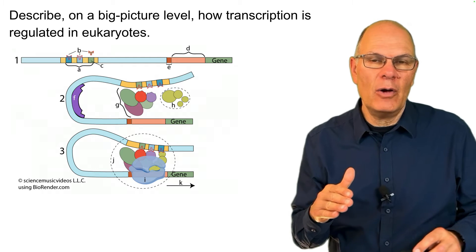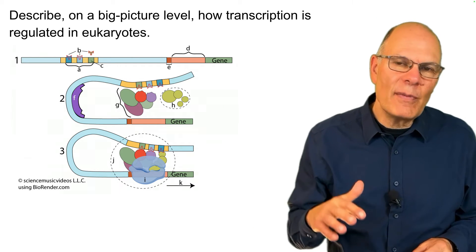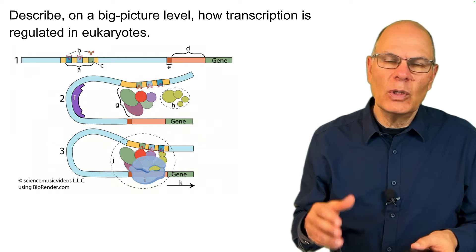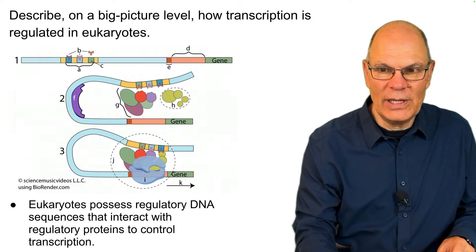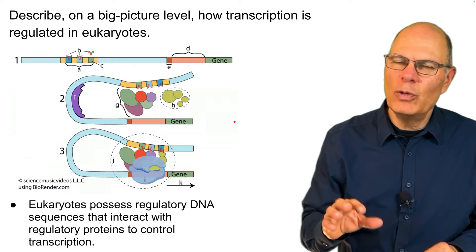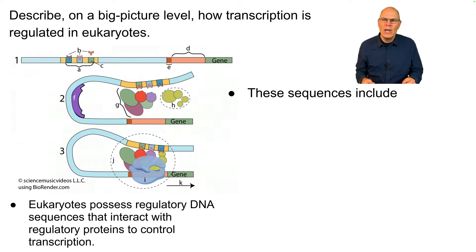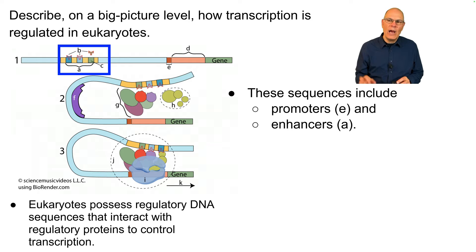How is transcription regulated in eukaryotic cells? Previously we talked about operons — how genes can be turned on and off in response to environmental changes. Eukaryotes have to be able to do that too, through acetylation, methylation, and histones, but also on a more immediate regulatory level. Eukaryotes possess regulatory DNA sequences that interact with regulatory proteins to control transcription. Regulatory sequences include promoters (shown at letter E) and enhancers (shown at letter A), which increase the probability that a gene will be transcribed.